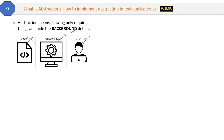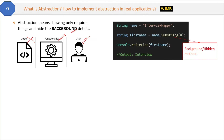Similarly in coding, we can create an application such that one developer can use a function without being aware of how it works internally. For example, here you can see we are using the substring method of a string class. This method is somewhere inside the base class of the .NET framework, and without knowing the background details you are using this method — that is also a kind of abstraction. Remember, abstraction is a concept and you can implement it in different ways.